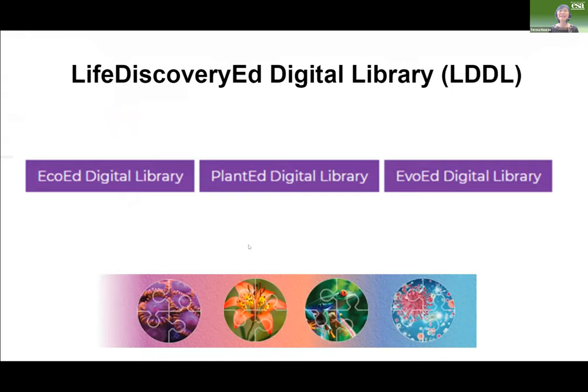The LDDL is made up of three portals for each of our societies: the EcoEd Digital Library, the PlantEd Digital Library, and the EvoEd Digital Library. They all go into the same database, but the review processes are different for each. Each society has its own editors, reviewers, and criteria. Do check it out — there are lots of teaching materials already there. Most of them are peer reviewed, and all teaching resources you'd use in the classroom are peer reviewed.